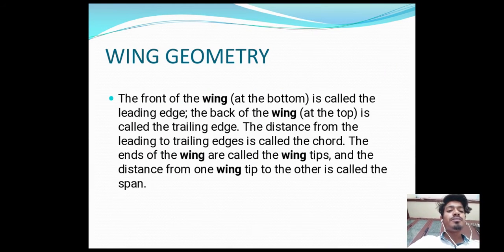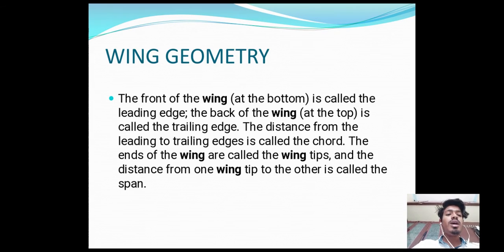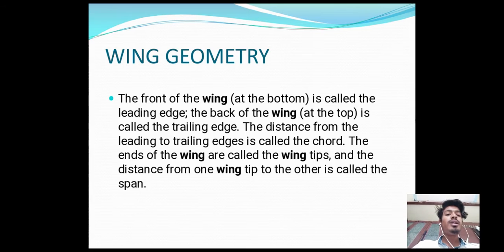Now, wing geometry. The front of the wing is called the leading edge and the back of the wing is called the trailing edge. The distance from the leading edge to the trailing edge is called the chord. The ends of the wing are called wing tips, and the distance from one wing tip to the other is called the span, or wingspan.